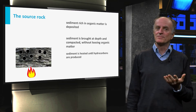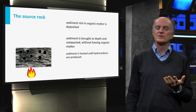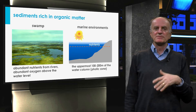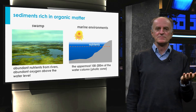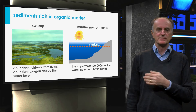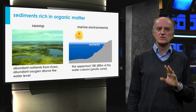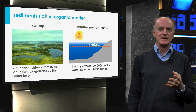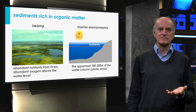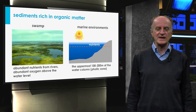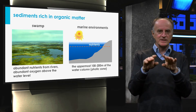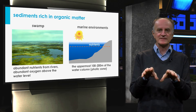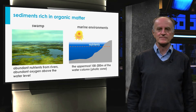This is more complicated than what it looks like. Abundant organic matter is generally produced in swamps as well as in marine environments. In these places, oxygen, light and nutrients are abundant, making it possible for flora and fauna to thrive. These living organisms, plants or animals, form the organic matter you will find in the source rock.